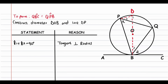Now focus on diameter DOB. If a diameter supports an angle at the circumference, that angle equals 90 degrees. So angle DPB equals 90 degrees, which means angle P1 plus angle P2 equals 90 degrees, because it is an angle at the circumference supported by a diameter — or equivalently, the angle in a semi-circle.